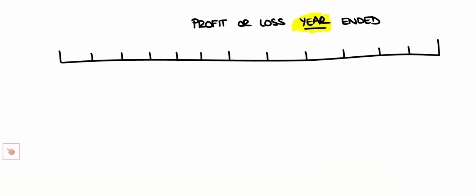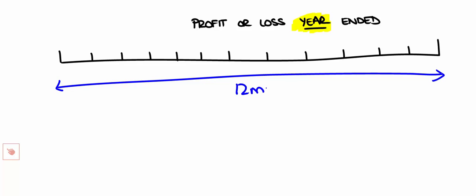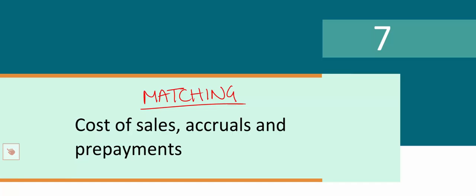The matching concept represents the idea that if we're preparing a set of accounts, a profit or loss for the year ended the 31st of December, then regardless of what cash I've paid, I will always need to show a full 12 months worth of expenses. I want to match my income and expenses to that 12 month period, regardless of any cash paid or received. We use accruals accounting, not cash based accounting. This chapter is all about matching expenses to the correct period and matching the cost of sales to whatever it is we've sold.